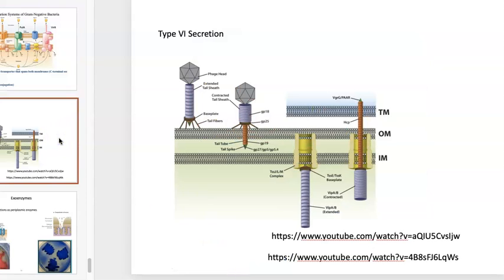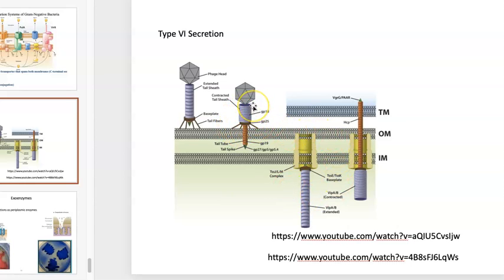The type 6 secretion system is used in what's called dueling, where microbes in complex and highly competitive environments can basically use these to stab each other. It appears they derived from the secretion apparatus of a bacteriophage, and somehow microbes have adapted these things for use in their own nefarious purposes.